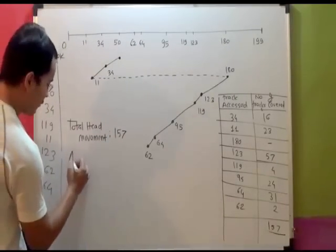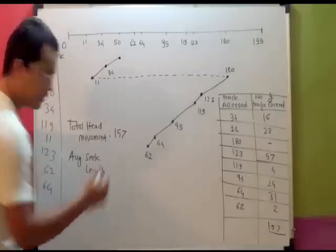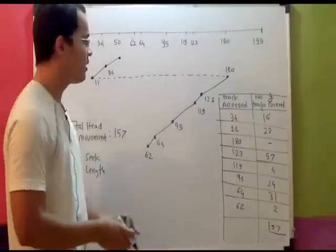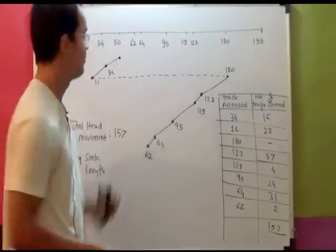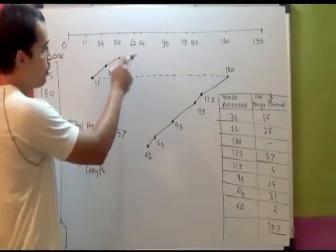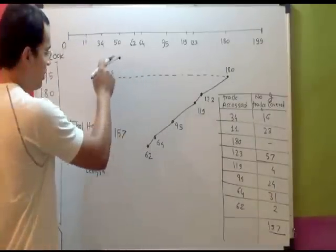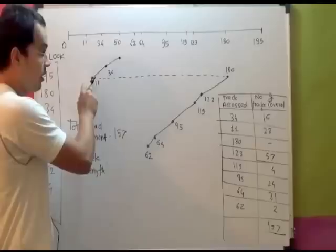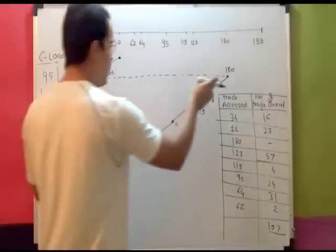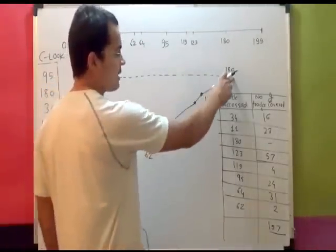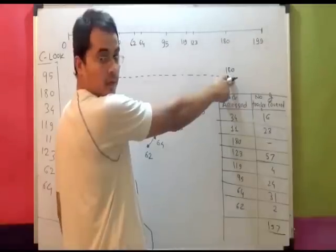What about average seek length? How many tracks did we access? We did not consider the initial position. 1, 2. Now, although we removed this from the head movement, we did access 180.